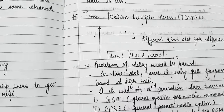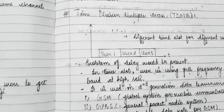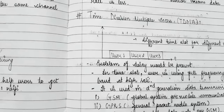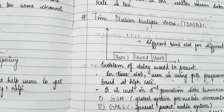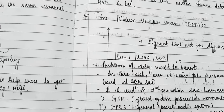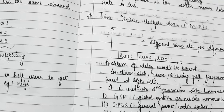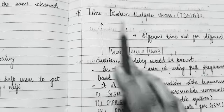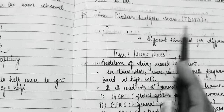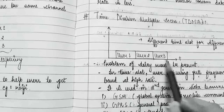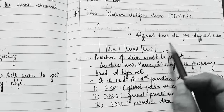Now if we talk about TDMA — Time Division Multiple Access. There were some drawbacks in FDMA; the first drawback was the guard band. To overcome this, we introduced TDMA. Here we have user 1, user 2, and user 3, and we take different time slots for different users.